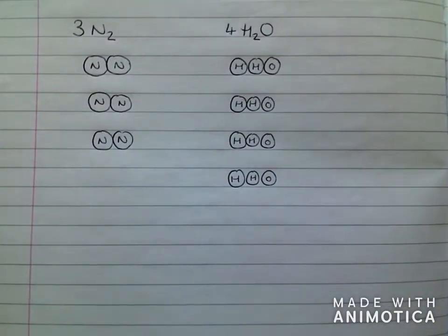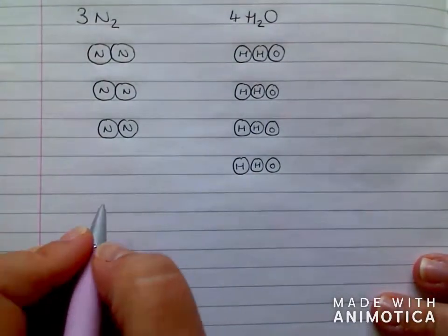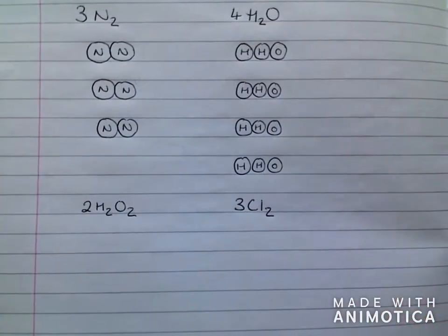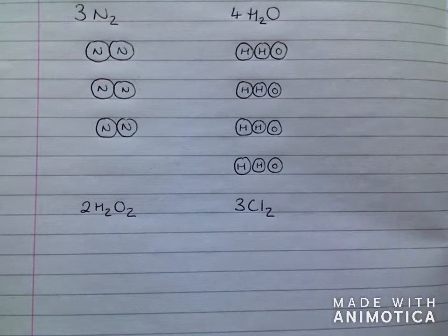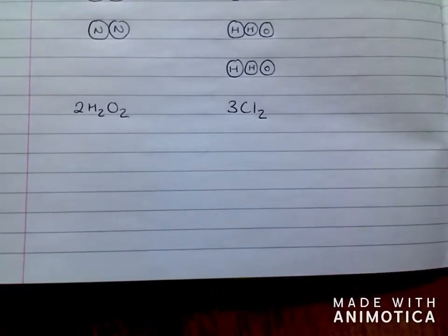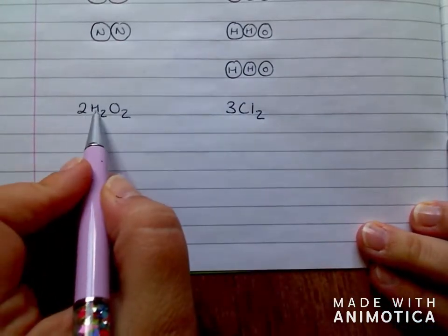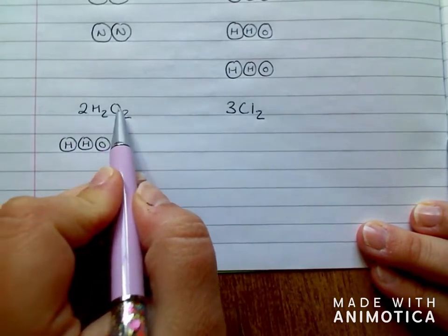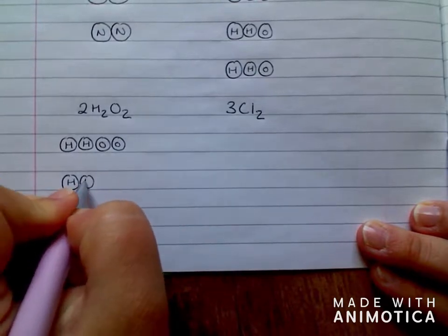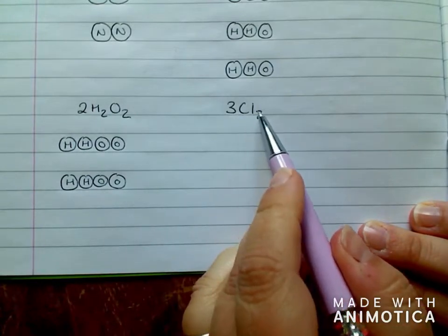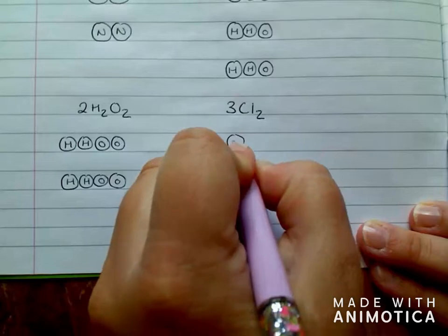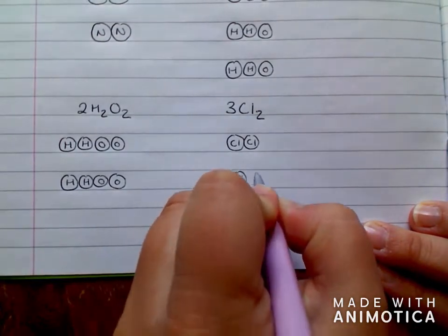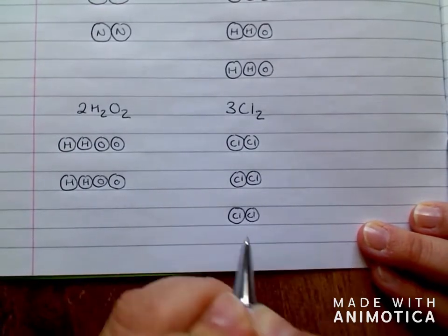What I'd like you to do now is pause the video and I want you to draw the following. I'd like you to draw two H2O2 and three Cl2. So, pause the video and do this now. Okay, so hopefully you've had a go at that now. So, the answer for this one: first, I draw HHOO, but remembering I want two lots of it. So, underneath, I'm just going to draw that again. This one, three lots of Cl2. First one is going to be Cl, Cl. But remembering, this time, I want three lots of Cl2. So, Cl, Cl, that's two. And then my last one will look like that.